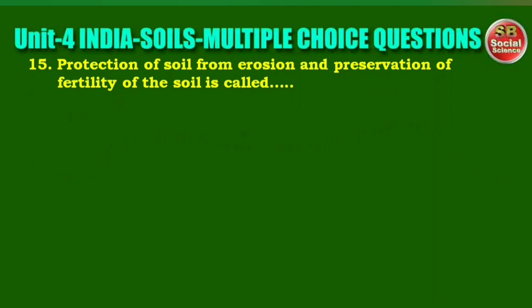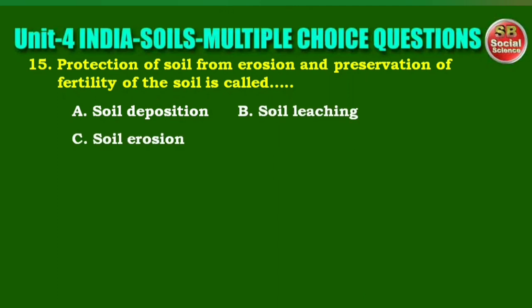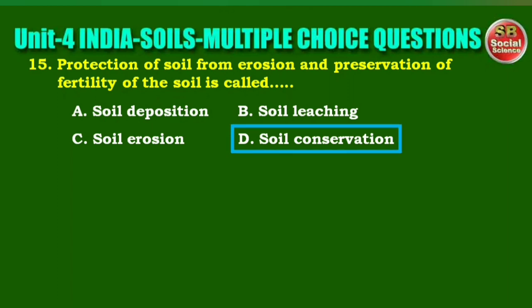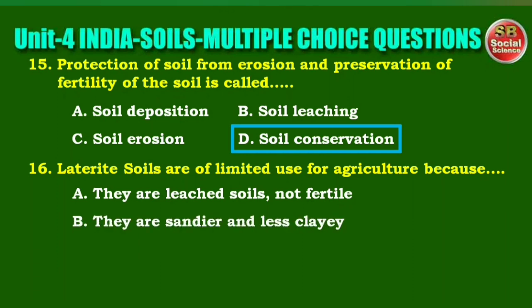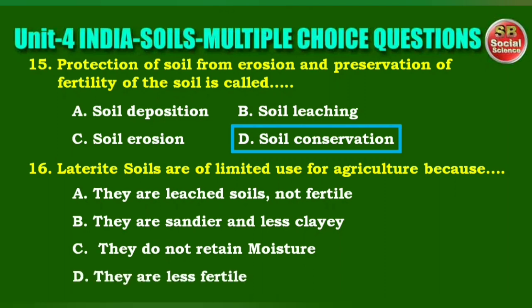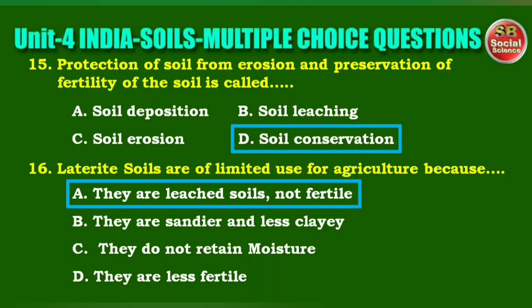Next question: protection of soil from erosion and preservation of fertility of the soil is called. Options are: soil deposition, soil leaching, soil erosion, soil conservation. The right answer is option D, soil conservation. Next question: laterite soils are of limited use for agriculture because. Options are: they are leached soils and not fertile; they are sandier and less clay; they do not retain moisture; they are less fertile. The right answer is option A, they are leached soils and not fertile.